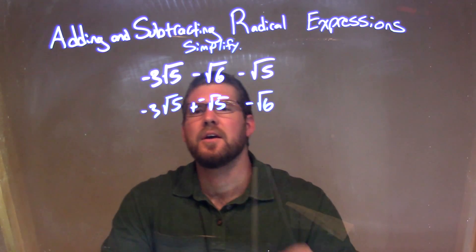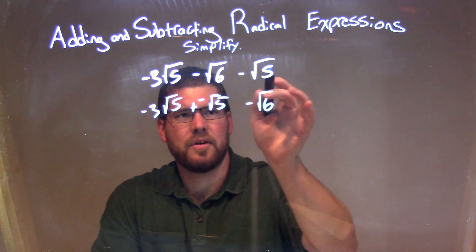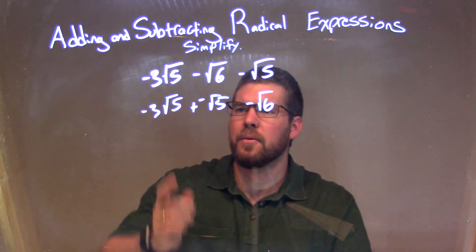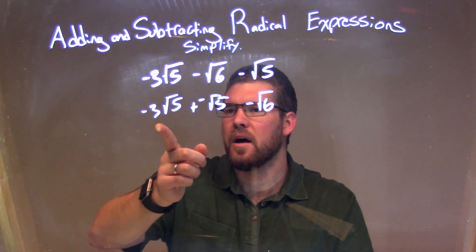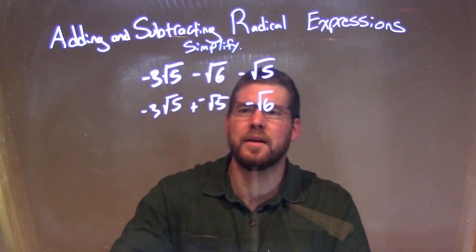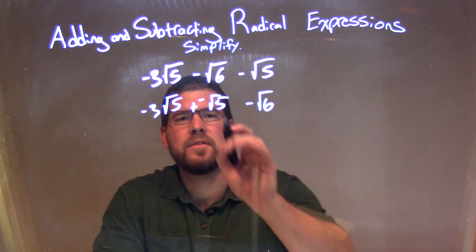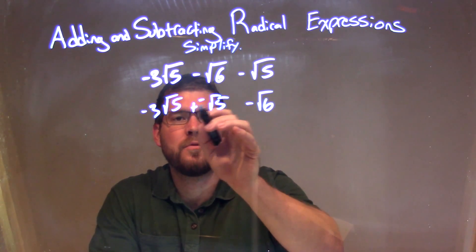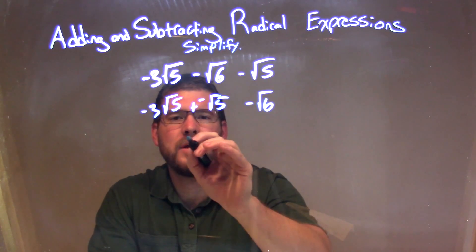So sometimes it's a little easier to see it as a plus and negative, so I brought this minus square root of 5 right here as a plus and negative square root of 5. So now we have negative 3 square root of 5 plus negative square root of 5. Well, since they have the same square root of 5 there, we can combine the coefficients, or the numbers out in front, negative 1 right there, and negative 3 gives me negative 4.